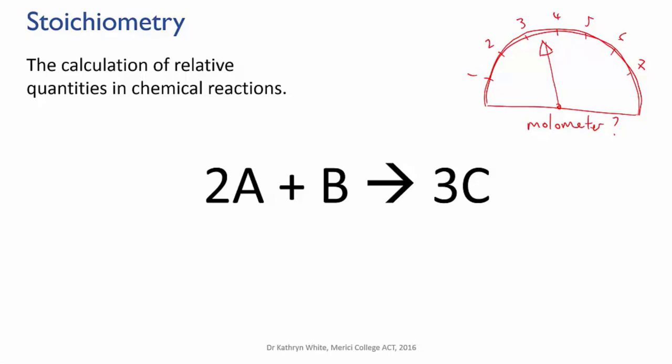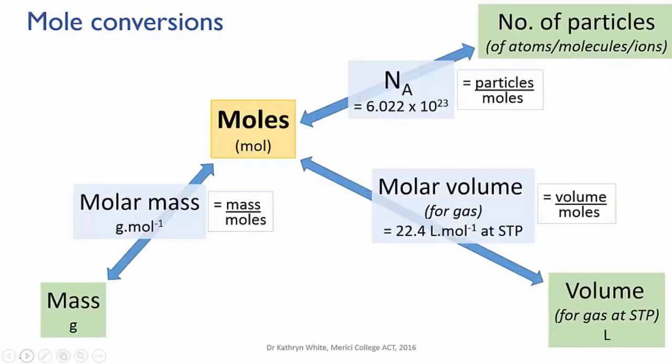Happily, we already have a strategy for doing this. You know that it's possible to convert moles of a substance into mass or number of particles or volume if it's a gas. The conversion factors are either a proper constant, like Avogadro's constant, or a constant under defined conditions, such as the gas molar volume, or can be calculated from information on the periodic table, like the molar mass.